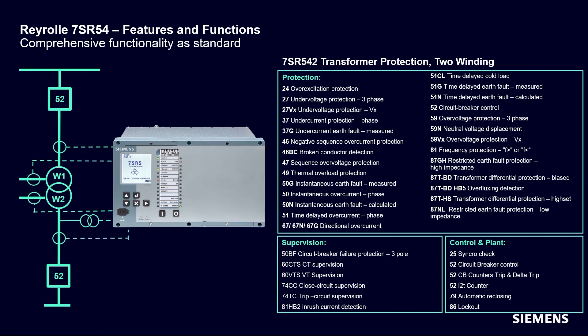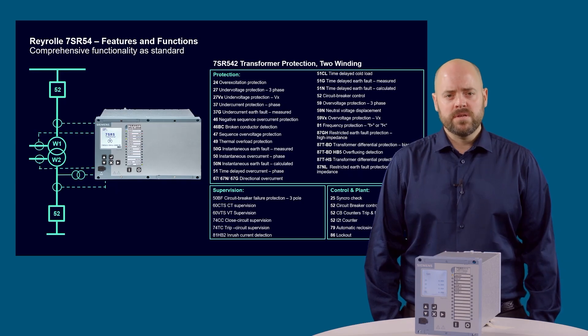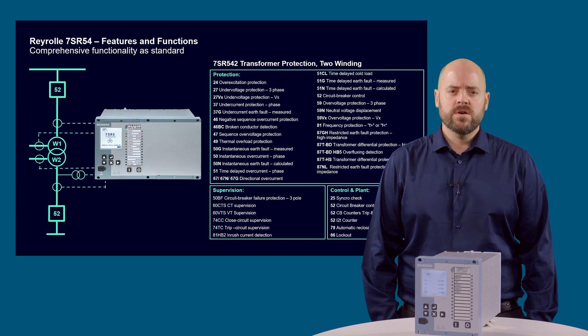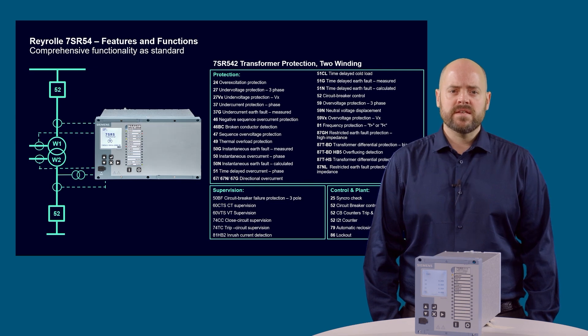To complete the scheme application, the device has the option for direct arc flash detection inputs with high-speed tripping contacts for fast clearance when arc faults are detected in enclosed switchgear, and temperature sensor inputs for connecting to sensors located in the plant.